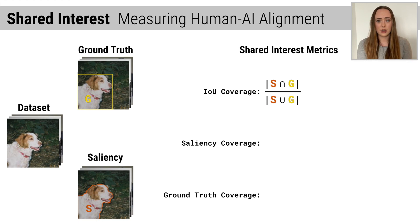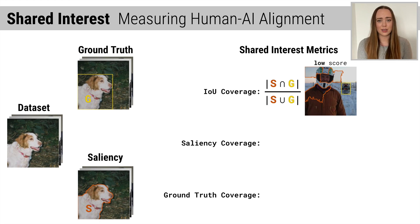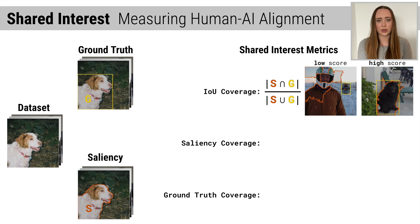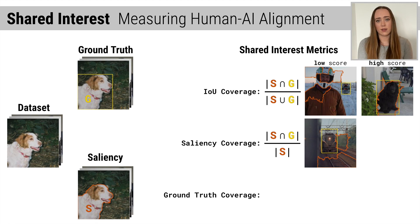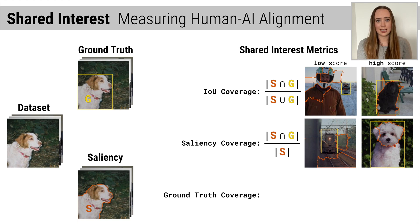IOU coverage measures the alignment between the saliency and the ground-truth. Low IOU coverage indicates that those regions are disjoint, like our snowmobile image from before. High IOU coverage indicates the saliency and ground-truth are almost identical. Saliency coverage measures the proportion of saliency features that are in the ground-truth. Low saliency coverage suggests that few of the features salient to the model are also ground-truth features, like in this image where the train tracks are salient as opposed to the train. High saliency coverage indicates that almost all of the saliency features are ground-truth salient, like in this example where the saliency highlights a subset of the dog.